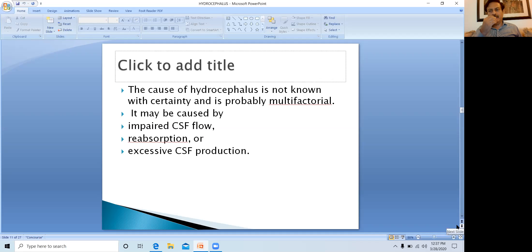The cause of hydrocephalus is not known with certainty and is probably multifactorial. It may be caused by impaired CSF flow, impaired reabsorption of the CSF, or excessive CSF production. There are three mechanisms.